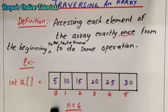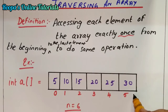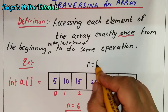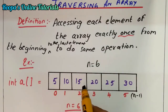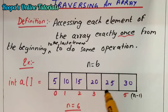At least once you are going to visit every element. So if you see here, I have an array — int a — with elements 5, 10, 15, 20, 25, and 30. The array has n equal to 6. So all these array elements have to be visited exactly once. That's what we mean by traversing — going to each element one by one.